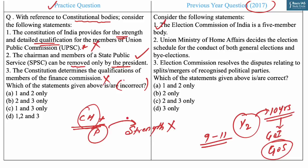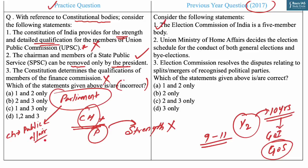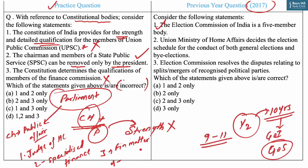Statement three says the Constitution determines the qualifications of members of the Finance Commission — this is incorrect. The Constitution authorizes Parliament to determine the qualifications of Finance Commission members and the manner of their selection. Parliament has specified that the Chairman should have experience in public affairs, and the four other members should include: a High Court judge or qualified person, a person with specialized knowledge of government finance and accounts, a person with wide experience in financial matters, and a person with special knowledge of economics.